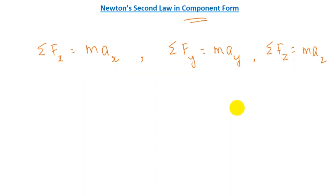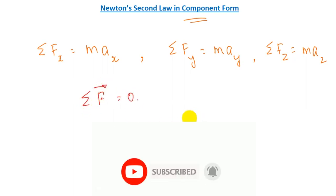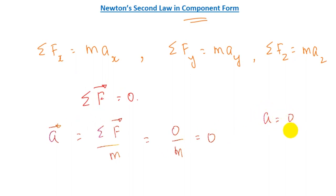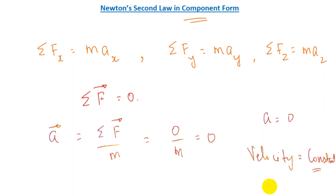When the net force on an object is zero, by Newton's second law acceleration equals Sigma F over mass, which becomes zero over m — so acceleration is zero. Zero acceleration means the velocity is constant. If the net force is zero, the object moves with constant velocity, which is exactly Newton's first law, showing the two laws are consistent.